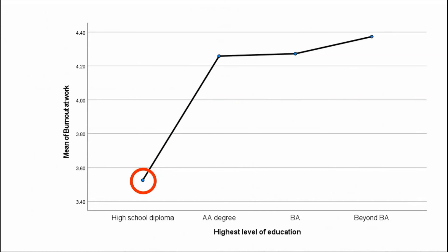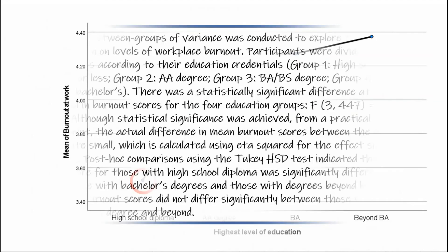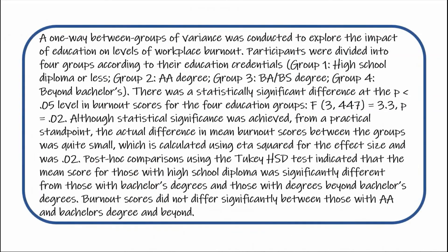To present the results from the one-way between-groups ANOVA with post hoc tests, you can narrate your report this way: ANOVA was conducted to explore differences in burnout among the four education groups. Participants were divided into four groups according to their education credentials. There was a statistically significant difference at the p=0.05 level in burnout scores for the four education groups. Although statistical significance was achieved, from a practical standpoint the actual difference in mean burnout scores between groups was quite small — ETA squared effect size was 0.02. Post hoc comparisons using the Tukey HSD test indicated that the mean score for those with high school diploma was significantly different from those with a bachelor's degree and those with degrees beyond bachelor's. Burnout scores, however, did not differ significantly between those with AA and bachelor's degree and beyond. I hope this tutorial was helpful.